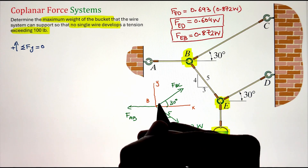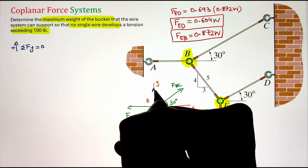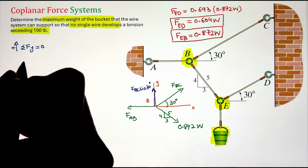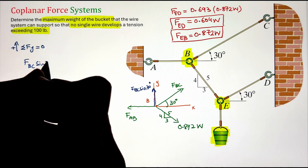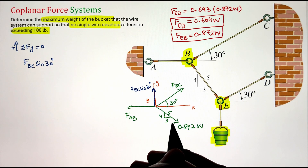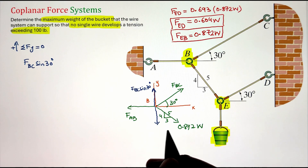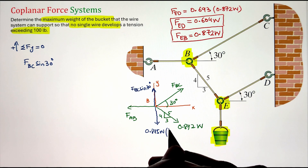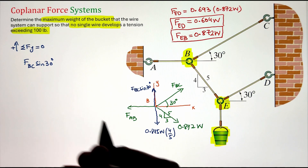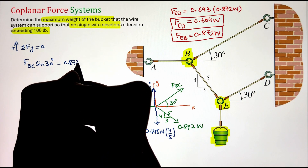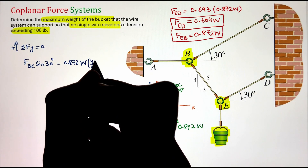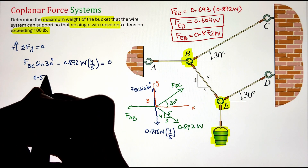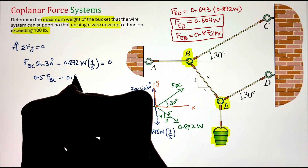Starting with the summation of forces along the y-axis, taking upward as positive: FBC projected along the y-axis is multiplied by sine 30. The vertical component of the 0.872W force from wire BE is found by multiplying with 4 over 5. Since this force acts downward, it is taken as negative. With only two force components in the vertical direction, their sum equals zero. Simplifying, we get FBC in terms of the weight of the bucket: FBC = 1.396W.